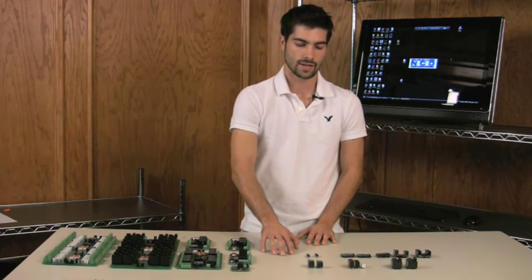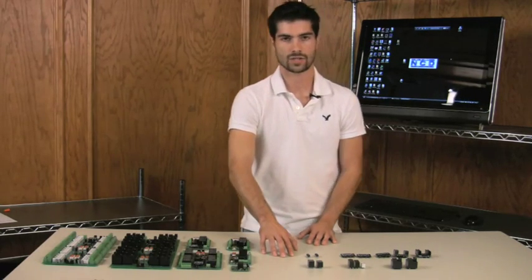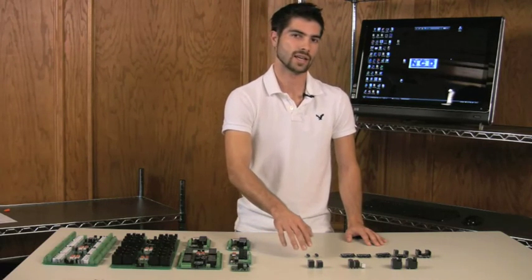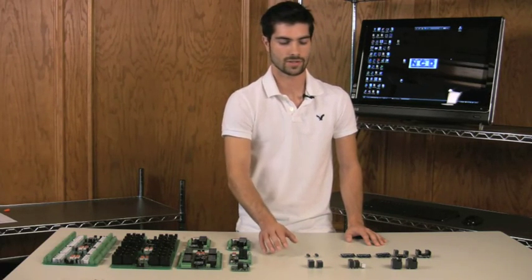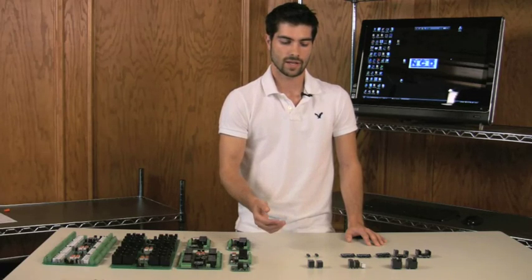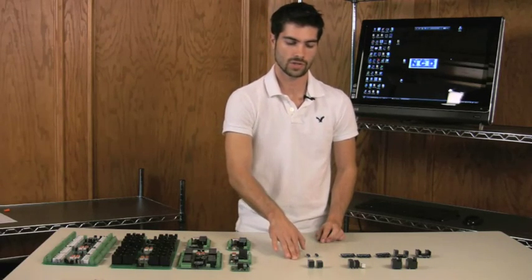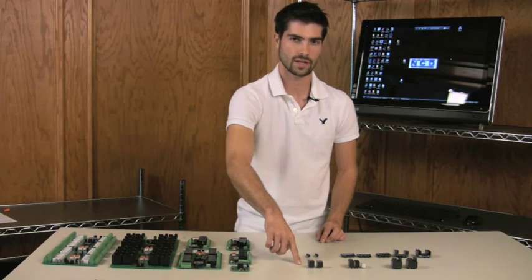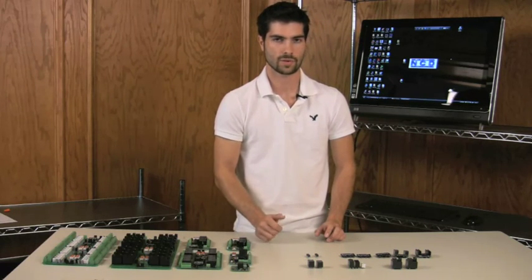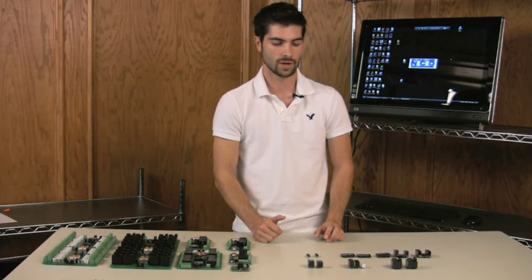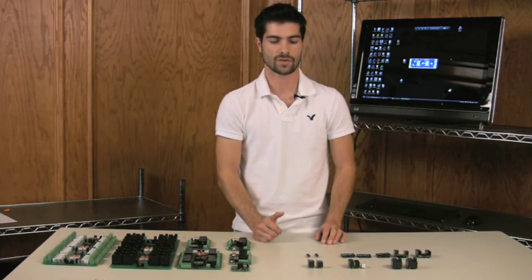A relay is basically an electronic component that has an input and outputs. So if you want to switch a line on and off, you're going to feed the line you want to switch into the relay, and then you're going to feed a line out to the device that you're switching on and off. There's different ways of doing that. We have a few different types of relays. They're referred to as SPST, SPDT, and DPDT.